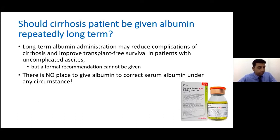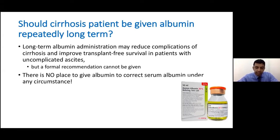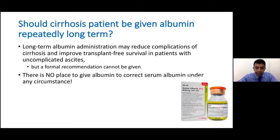There has been controversy about albumin, as some trials show that recurrent albumin infusion may be beneficial, but there is also evidence showing no benefit. Baveno 7 stays away from this and says there is no evidence to recommend either way. However, we know we should definitely give albumin for spontaneous bacterial peritonitis, acute kidney injury, large-volume paracentesis, and hepatorenal syndrome combined with terlipressin.